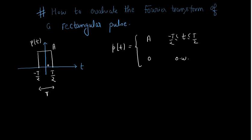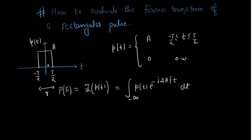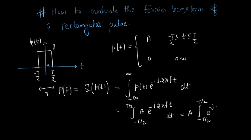From the definition of the Fourier transform, the Fourier transform of our pulse P(t) would be the integral of P(t) · e^(−j2πFt) dt, which we call P(F). Since P(t) is only non-zero when t is from minus T/2 to T/2, we can change the limits to minus T/2 to T/2, and over this interval the pulse has amplitude A.